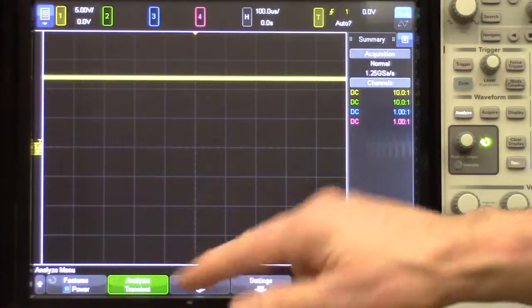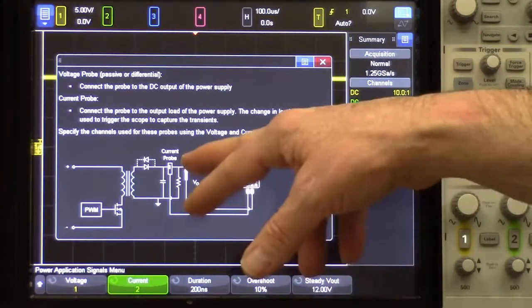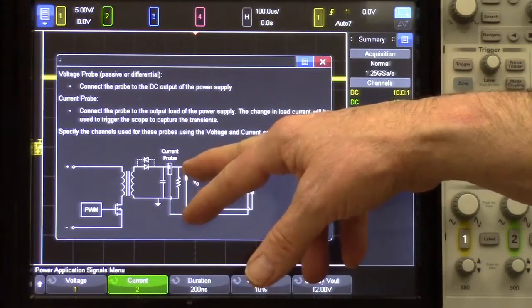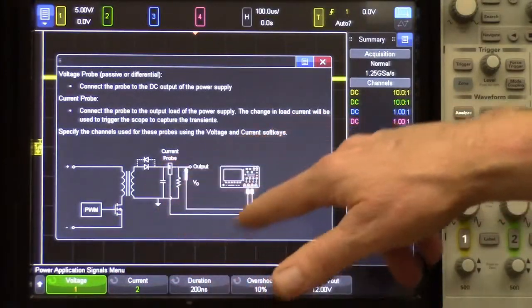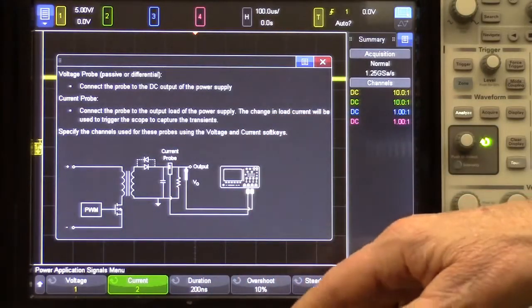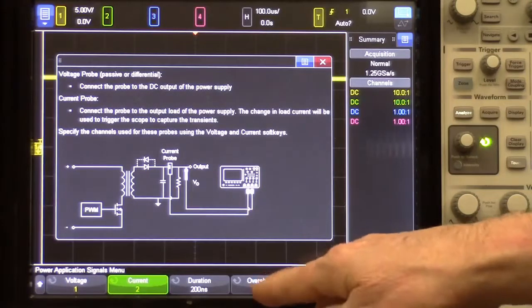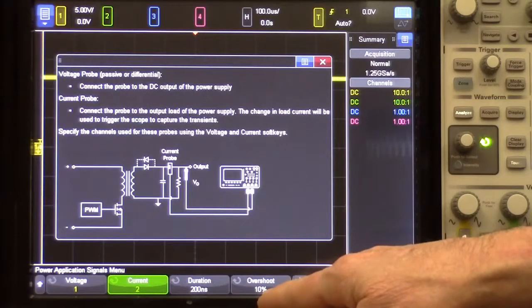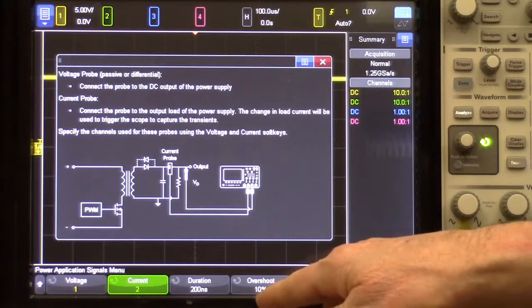Next, let's go into the signals menu. Here you can see a diagram similar to what we showed earlier, showing you how to connect your probes. So in this case, we have a 10-to-1 passive probe connected to the 12-volt DC output, and that's on channel 1. And we have a current probe connected to channel 2, measuring the output DC current. And here's where you can set your steady state DC output level, and then to what percentage level do you want to measure the time. And we're going to use the default of 10%.